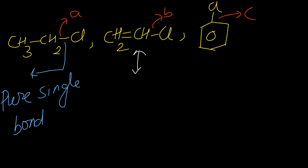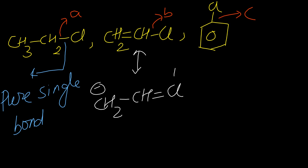For molecule B, if we look, we will have two different resonating structures — structure one and structure two. Definitely, structure one is more stable than structure two, but still it will have double bond character. So bond A in molecule B will be much longer than in molecule A, because in A it is a pure single bond while in B there is partial double bond character reducing the bond length.